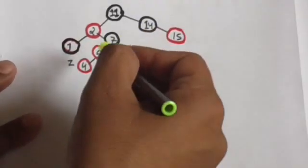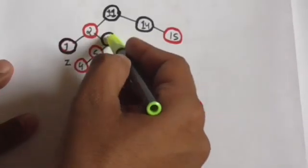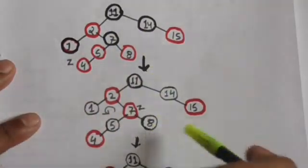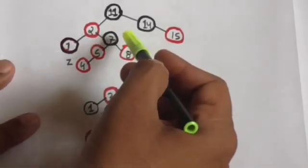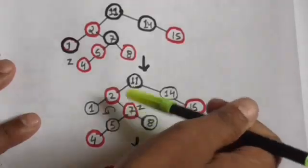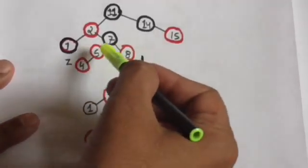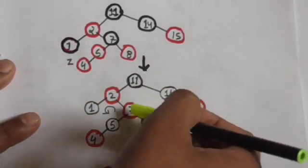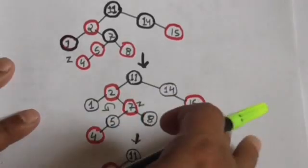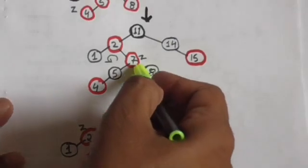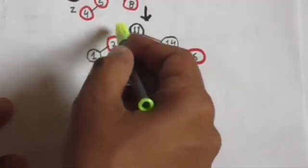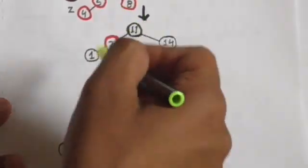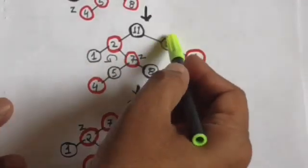After this, the parent of parent of node Z is considered as the new node Z. We now have the updated red-black tree where node 7's color has changed from black to red, and the two nodes 5 and 8 have changed from red to black. Now node 7 is node Z. Its color is red and its parent is also red, which again violates the red-black property.